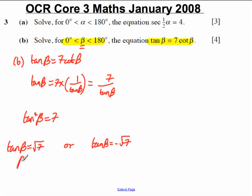So let's solve for beta. Beta must equal the inverse tan of root 7. If we work out the inverse tan of root 7, we get 69.3. So beta must equal 69.3 degrees.